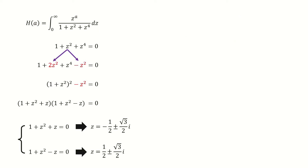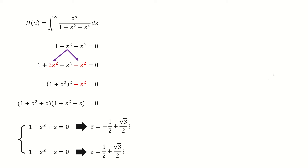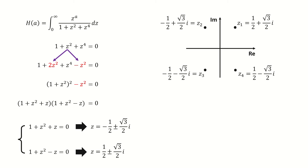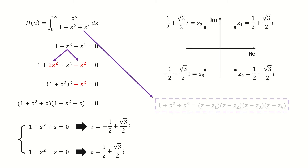This part has been covered in my previous video, and you can click here to see the details. I'll just quickly go through it. Here we try to find the poles for the integrand, so we set the denominator equal to 0. Then we factorize it into two quadratic equations, and we find the four roots here. I have marked them on the complex plane, so the denominator can be written in this factored form.